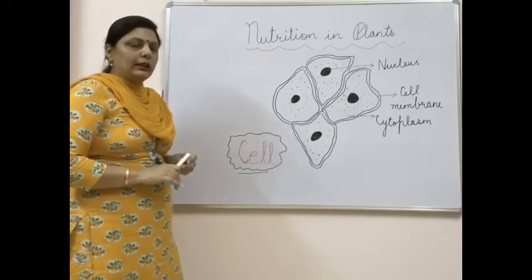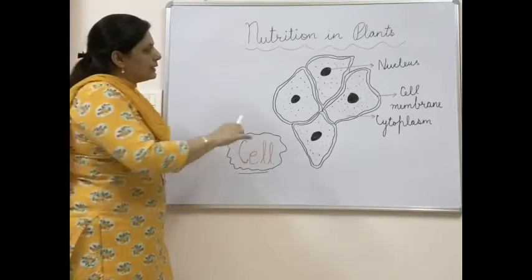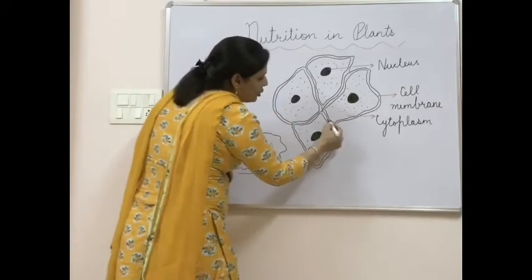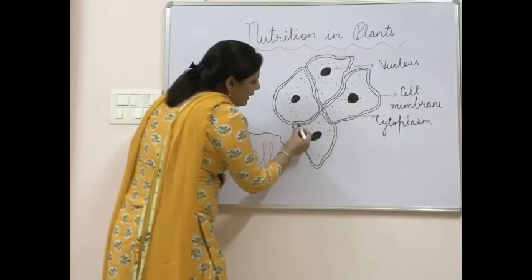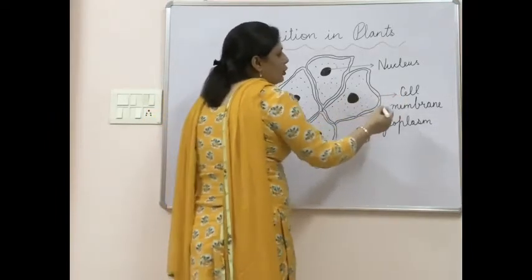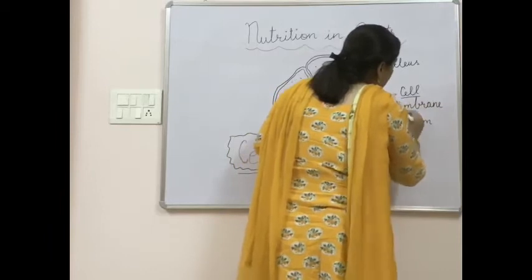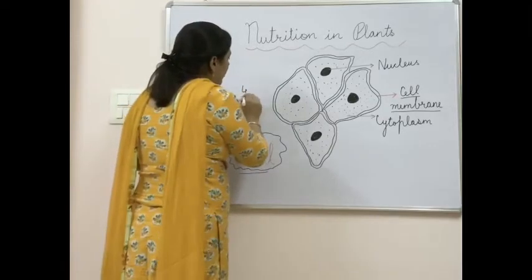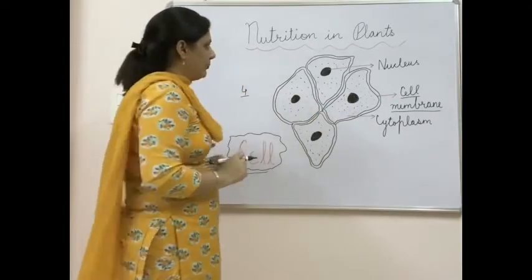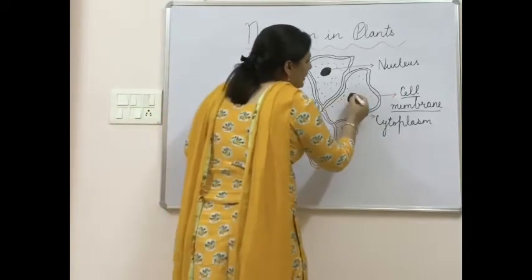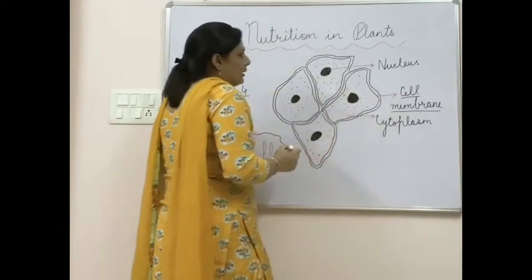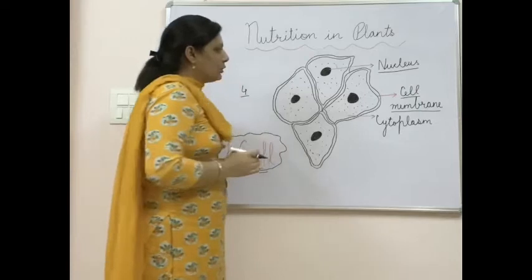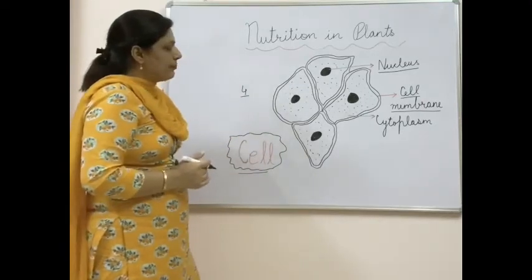You will learn about cells in detail in your eighth class, but for now you should know some basic things. There are two boundaries visible here. The inner boundary of the cell is called the cell membrane — this is present in all cells. The dark rounded structure inside each cell is called the nucleus.